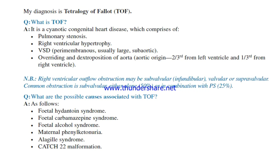What is tetralogy of Fallot? It is a cyanotic congenital heart disease comprising: pulmonary stenosis, right ventricular hypertrophy, ventricular septal defect (perimembranous, usually large, sub-aortic), and overriding and dextroposition of the aorta — with aortic origin two-thirds from left ventricle and one-third from right ventricle. Note: right ventricular outflow obstruction may be sub-valvular (infundibular), valvular, or supra-valvular. Common obstruction is sub-valvular, either alone (50% of cases) or in combination with pulmonary stenosis (25% of cases).